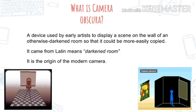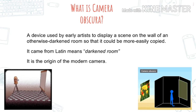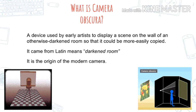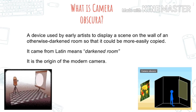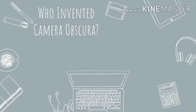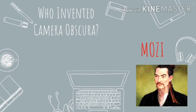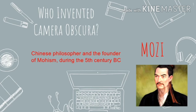The Camera Obscura is as old as the 5th century before Christ. We don't really know who was the very first to use the Camera Obscura, but in my research I found the oldest recorded user of the Camera Obscura. It is Mozi — a Chinese philosopher and the founder of Mohism during the 5th century BC. He is recorded as the earliest known user of the Camera Obscura.